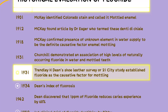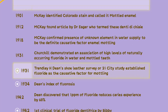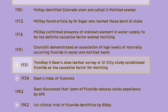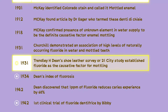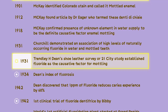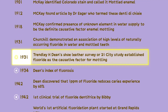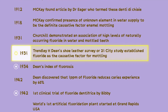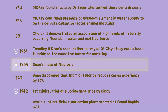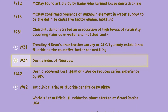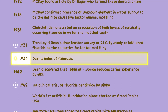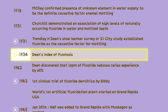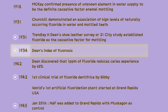Also in 1931, Trendley H. Dean conducted the Shoe Leather Survey, or the 21-city study, which established fluoride as the causative factor for mottling. In 1934, Dean developed the Dean's Index of Fluorosis to assess the severity of dental fluorosis.